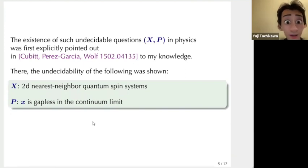The existence of such undecidable questions in theoretical physics was first explicitly pointed out in this paper from 2015 to my limited knowledge. In that paper, the undecidability of the following kind was shown. They considered various two-dimensional nearest neighbor quantum spin systems and they asked the question whether such systems are gapless in the continuum limit. And they showed that this type of question is undecidable.